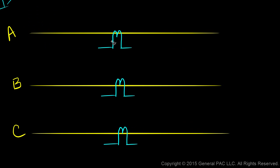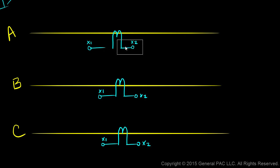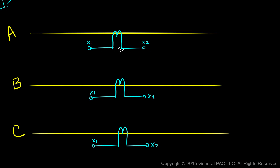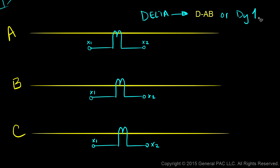Let's zoom in a little. Consider this side as our X1 bushing and this side as our X2 bushing — same for Phase B and Phase C. We're going to take these 3 CTs and connect them in Delta, more specifically in the Delta A or DY1 configuration.